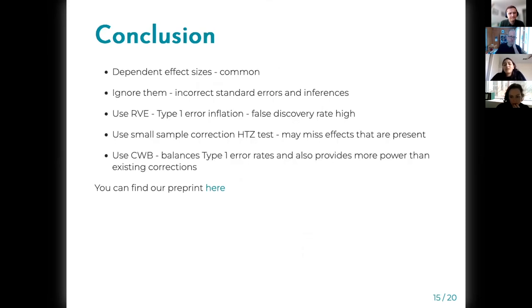To conclude, dependent effect sizes are very common in meta-analysis and social sciences. If we ignore them we can get incorrect standard errors and inferences. If we use RVE, the CR0 type CRVE suggested by Hedges, Tipton, Johnson, it can result in type I error inflation, which means false discovery rate will be high.